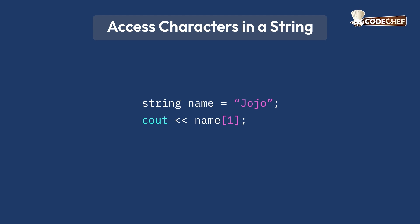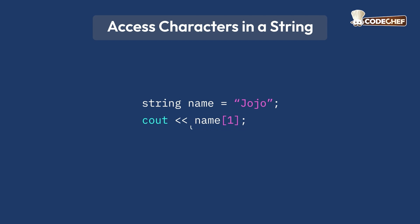In this case, the string name is Jojo. When we use name[1], we are accessing the character at index 1, which is O. Thus, the program prints O.